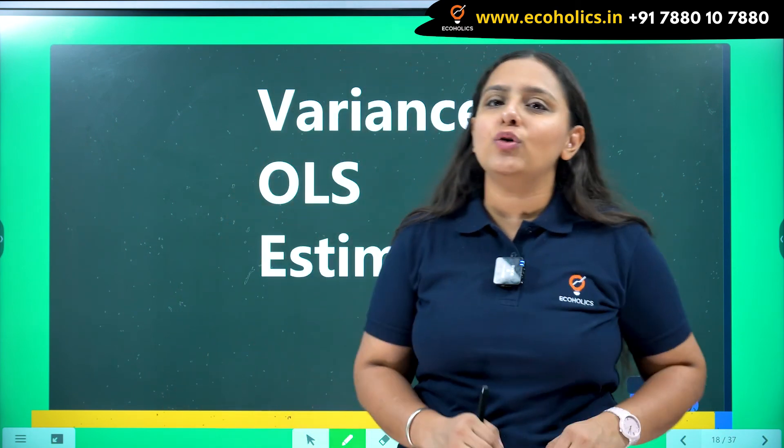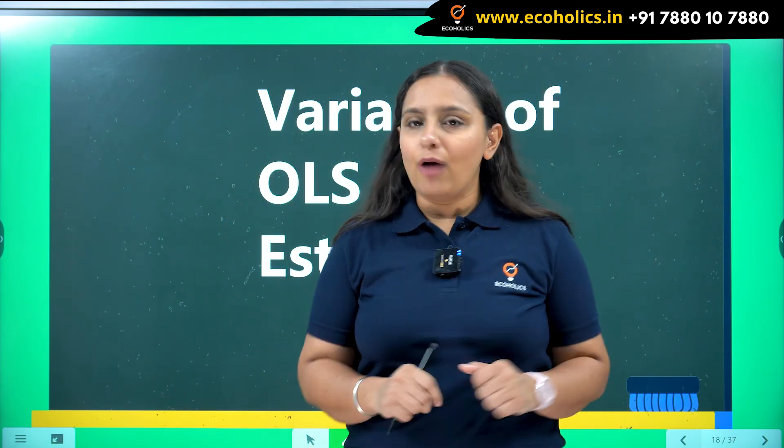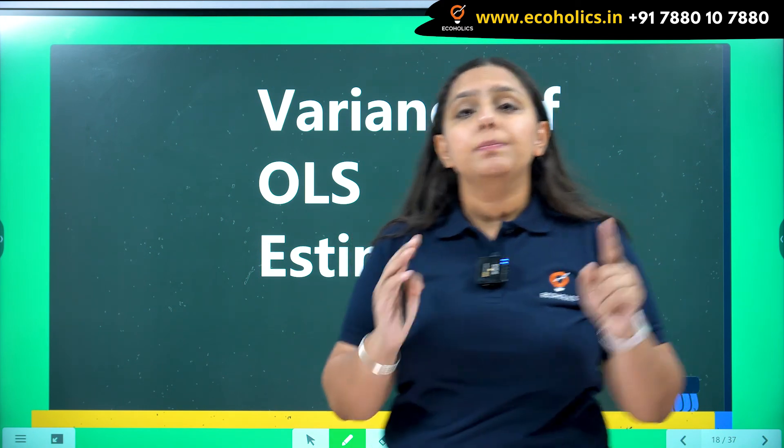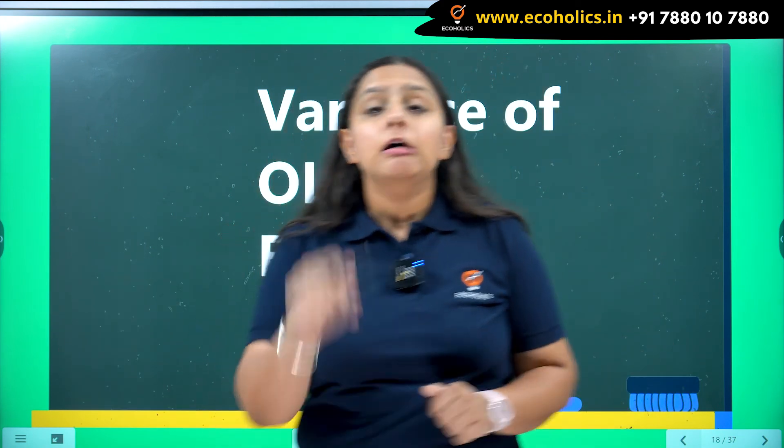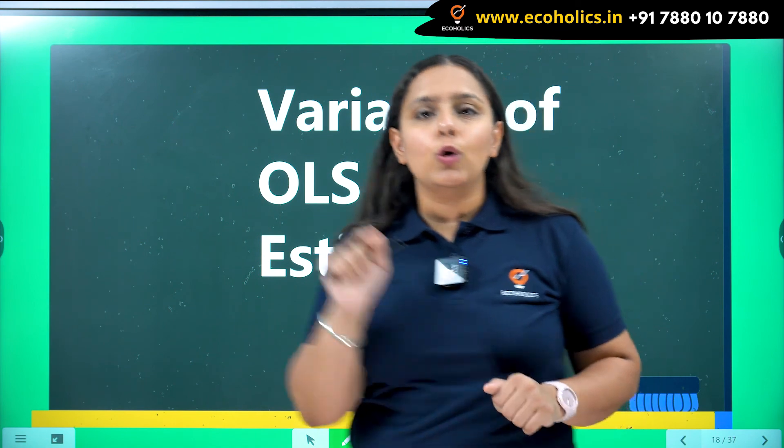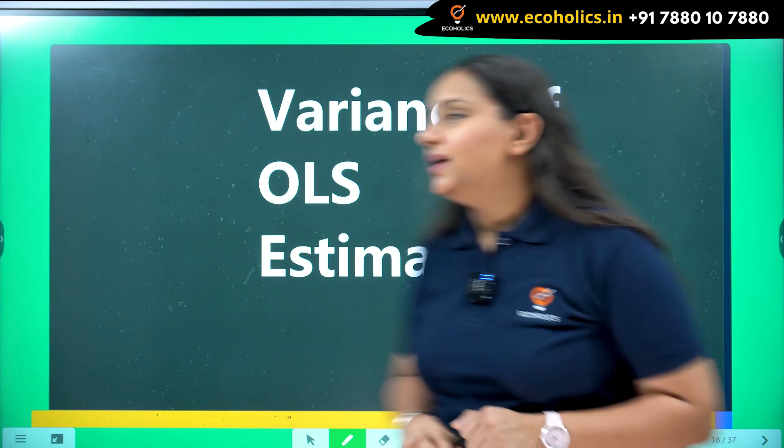So in this video, we are going to talk about how to find the variance of the beta 2 hat, that is the variance of slope coefficient estimator. Let's see.